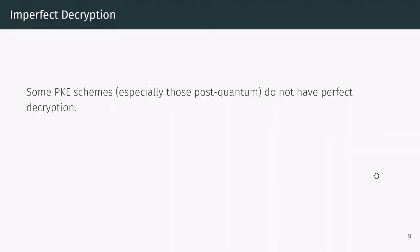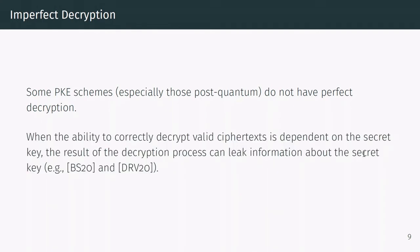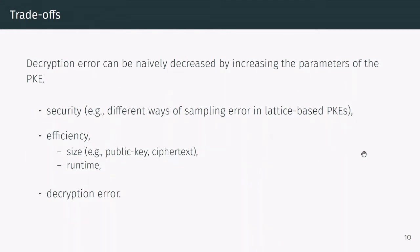Most of the problems on which post-quantum cryptography is built — for example lattices or coding theory — involve some kind of error correction. Therefore, most PKE schemes built from these problems do not satisfy the perfect decryption definition. Moreover, since in such schemes the ability to correctly decrypt a ciphertext depends on the secret key, the mere effect of not being able to decrypt can leak information about the secret key itself, as shown in various works. This problem can be naively addressed by increasing the parameters of the scheme, which reduces the decryption error at the cost of a bigger public key and ciphertext size. Another option is to reduce the error in the underlying mathematical problem, but this results in a PKE with lower security guarantees. Hence, one faces different trade-offs between security, efficiency, and decryption error.